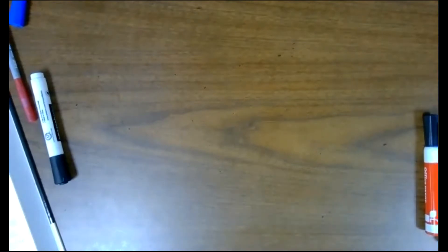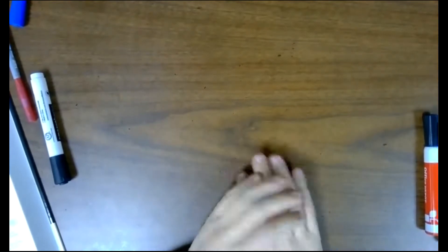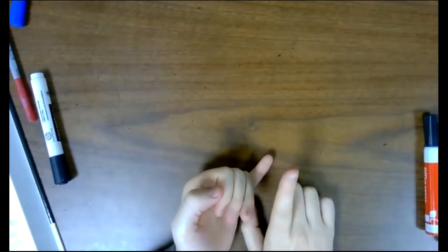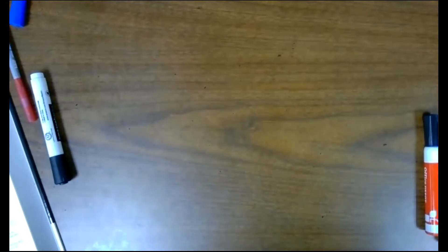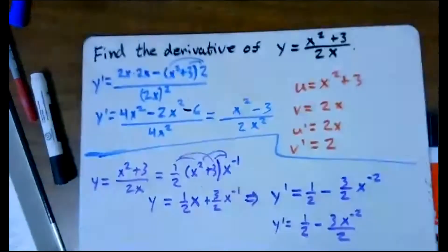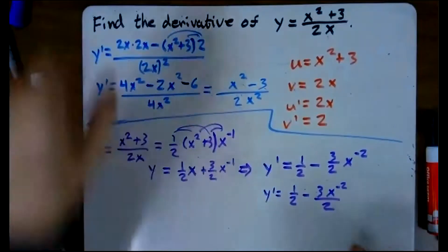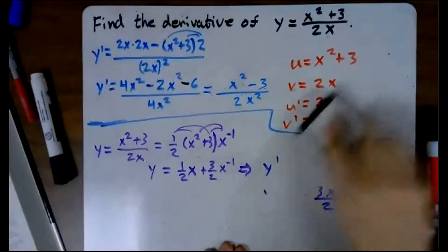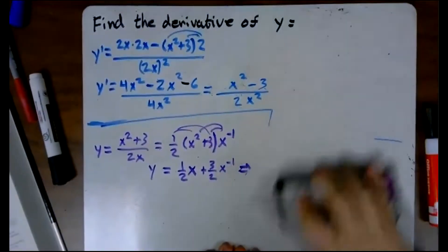In a previous lesson, we learned about three basic types of polynomials: constant functions, which are polynomials of degree zero; linear functions, which are polynomials of degree one; and quadratic functions, which are polynomials of degree two. Today, we're going to start learning about higher degree polynomials — polynomials of degrees three and four.